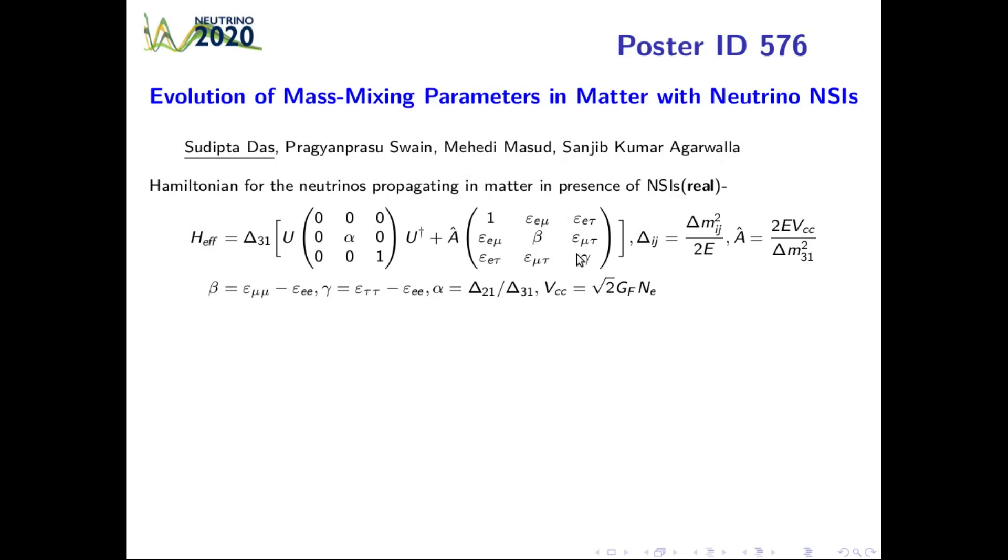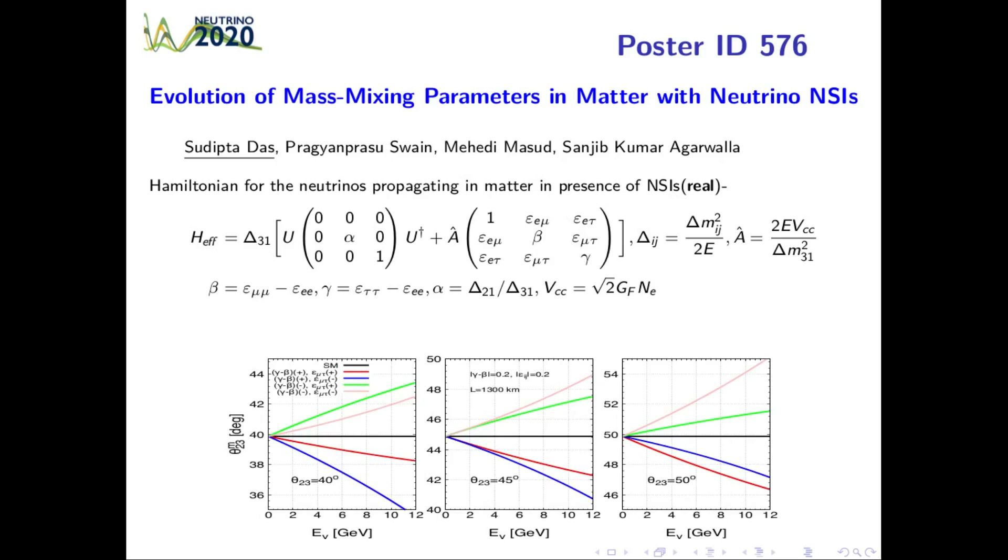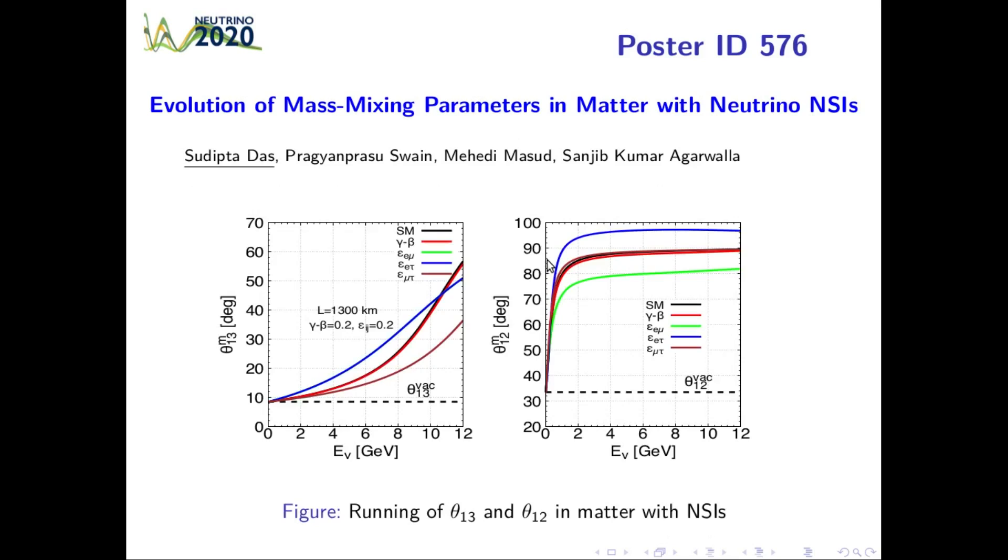We observed that running of theta_23 in matter depends only on elements from the 2-3 block of the NSI matrix. The modified theta_13 depends on all NSI parameters, but off-diagonal NSI elements have considerably larger effect. Theta_12 saturates to pi/2 at very low energy in case of standard model as well as in presence of NSI.